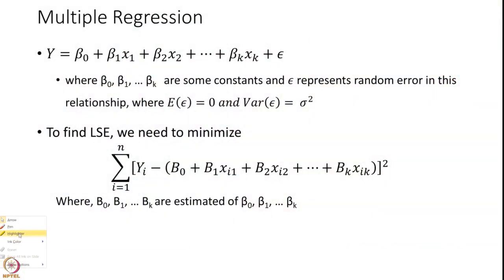Let us move on to the next issue of multiple regression. We originally considered a model and dealt with simple linear regression using only beta_0 and beta_1. Now let us consider the full case: y = beta_0 + beta_1 × x_1 + beta_2 × x_2 + ... + beta_k × x_k, where beta_0 through beta_k are regression coefficients.